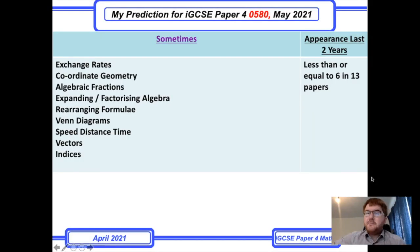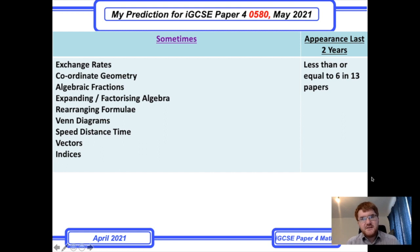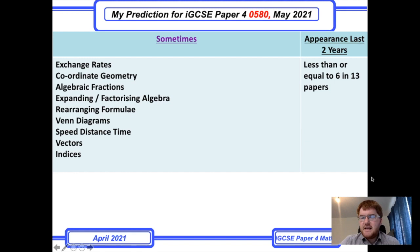Like I did in my previous video where I predicted Paper 2, I'll go in the same order: first my 'sometimes' topics that come up on Paper 4, then my 'often' topics, and then my 'almost certain' topics. Do make sure you check out the entire video as I go into some details on the comments I've made. These 'sometimes' topics have appeared less than or equal to 6 times in 13 papers over the last two years.